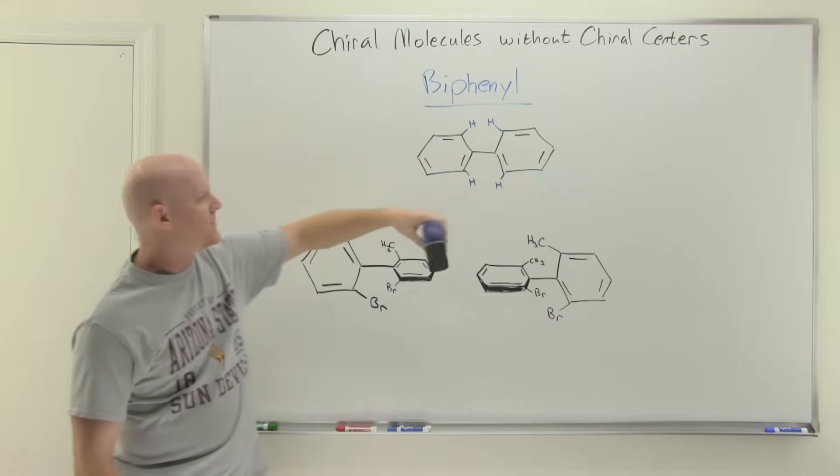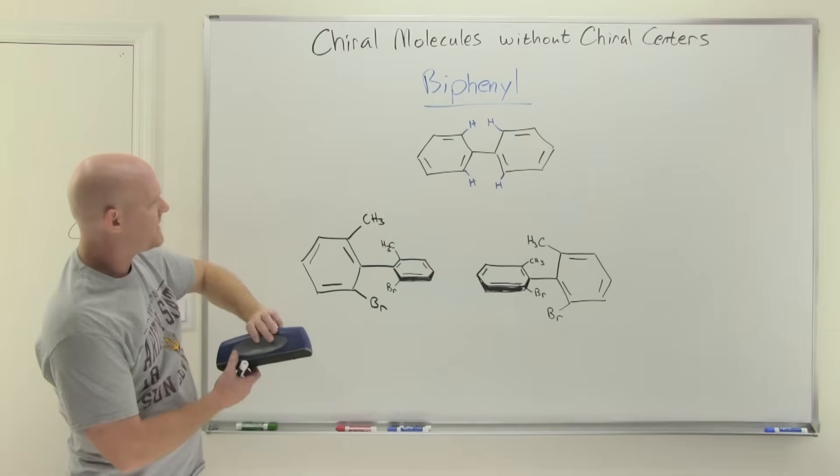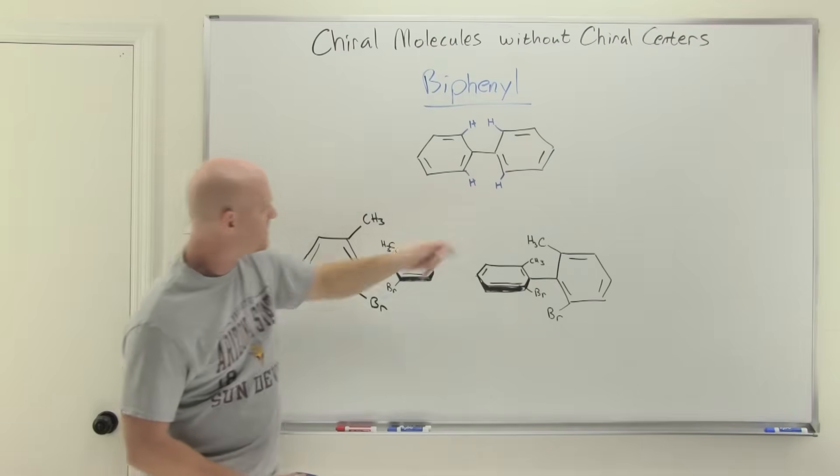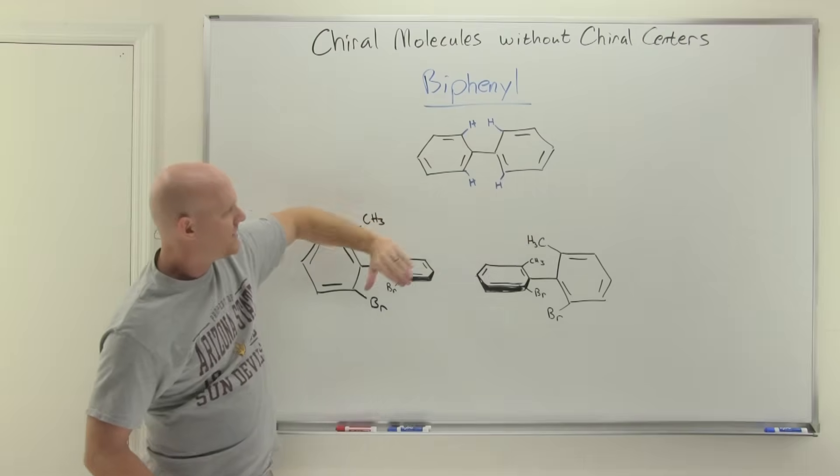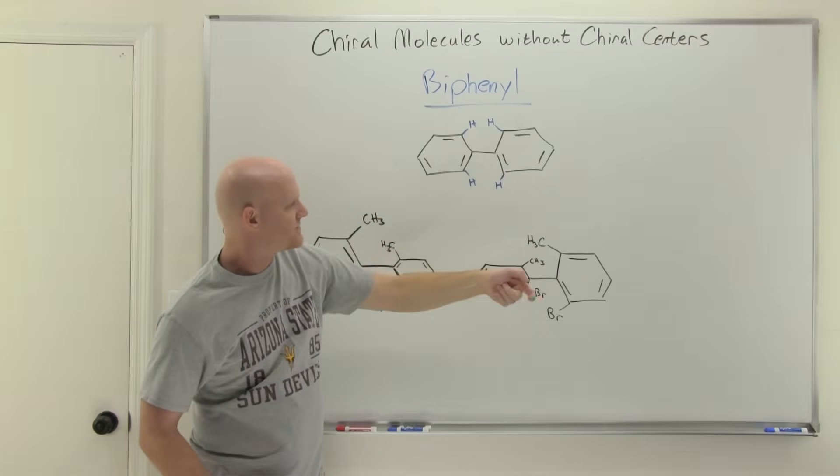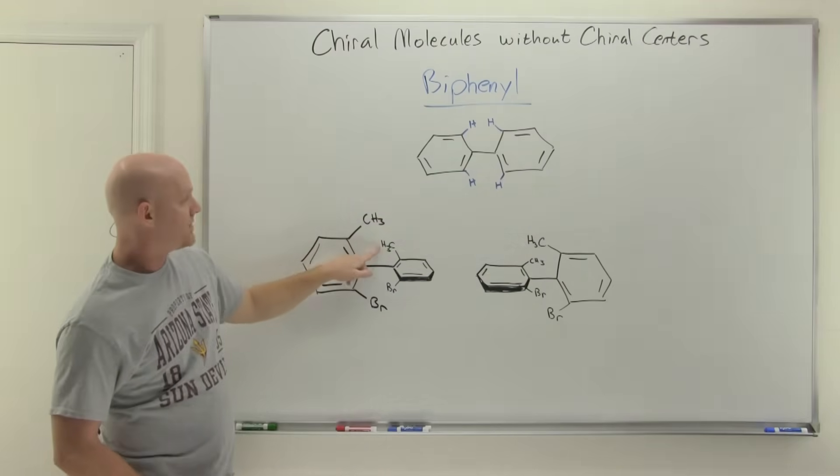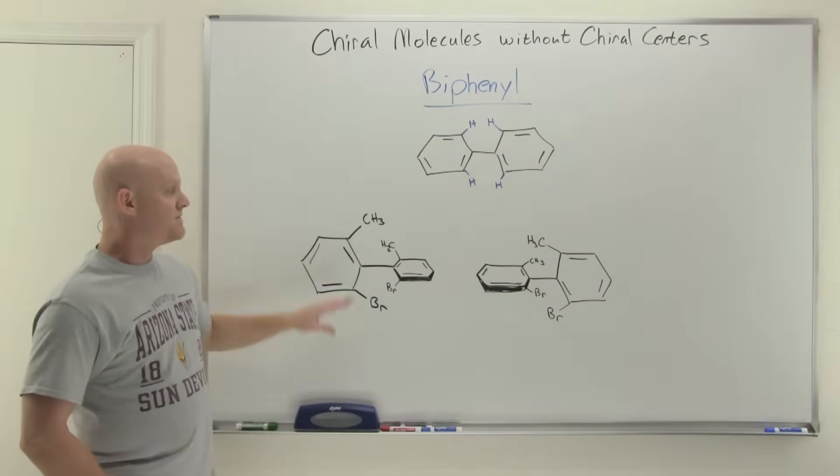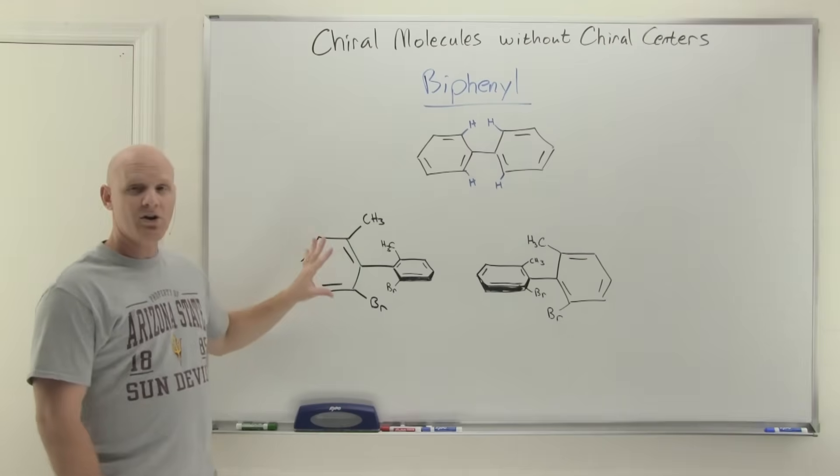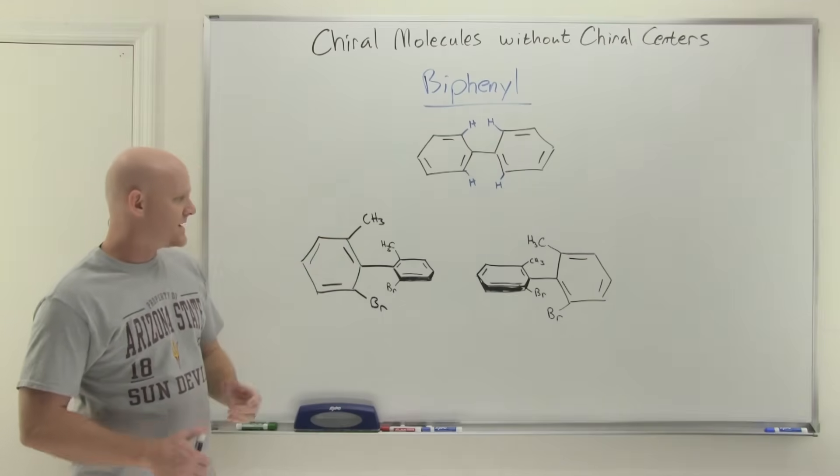If you took this and flipped it around to match things up, you'd find out that this methyl and this methyl would line up perfectly. This bromine and this bromine would line up perfectly. But once you flip this around, then the bromine, instead of being out towards the front and the methyl in the back, it would have the bromine in the back and the methyl out toward the front. And they would not be the same molecule at all. So these are enantiomers. These molecules are chiral in this case.